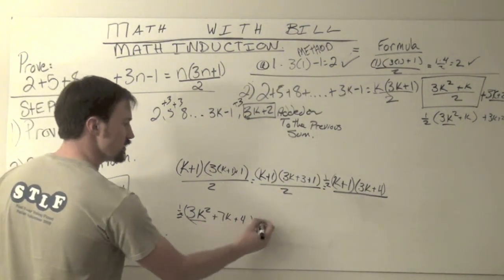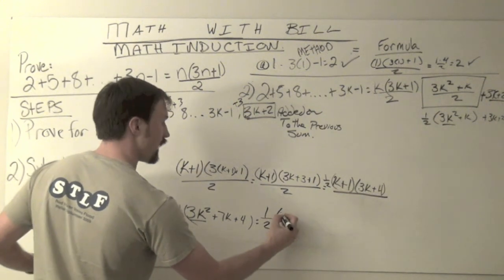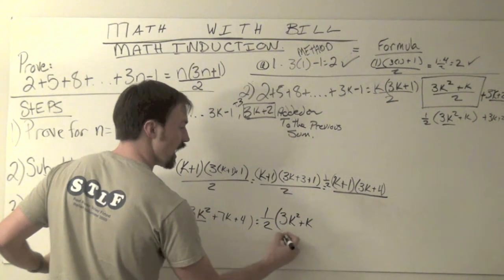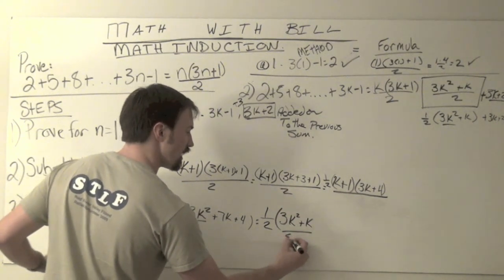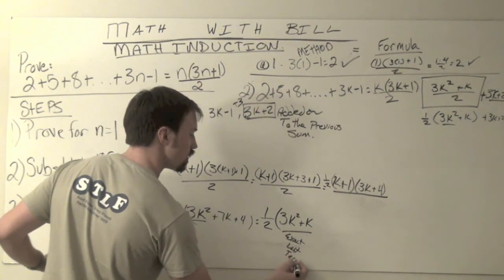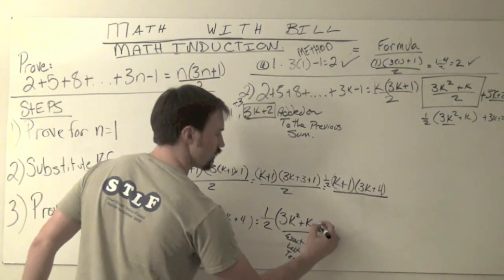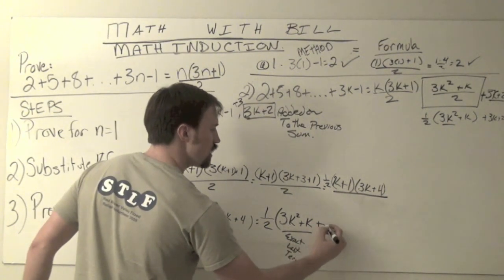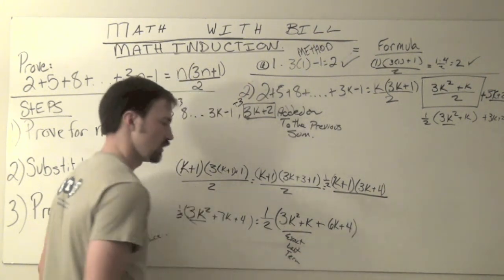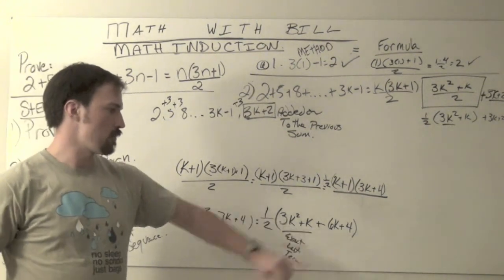So I'm going to rewrite this as a 1 half times my 3k squared plus k, and now that is the exact last term when we did our substitution, plus 6k plus 4, okay?